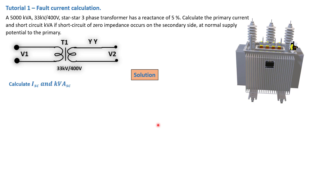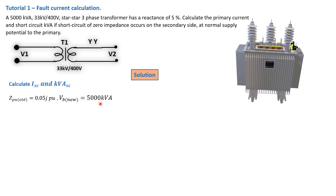First we need to calculate the per-unit values. To find our short circuit current and short circuit KVA, we first determine the per-unit values for our transformer. They gave us a 5% reactance, which means Z_pu for this transformer is j0.05 per unit. The base MVA, S_B_new, is 5,000 kVA — that is 5 MVA.